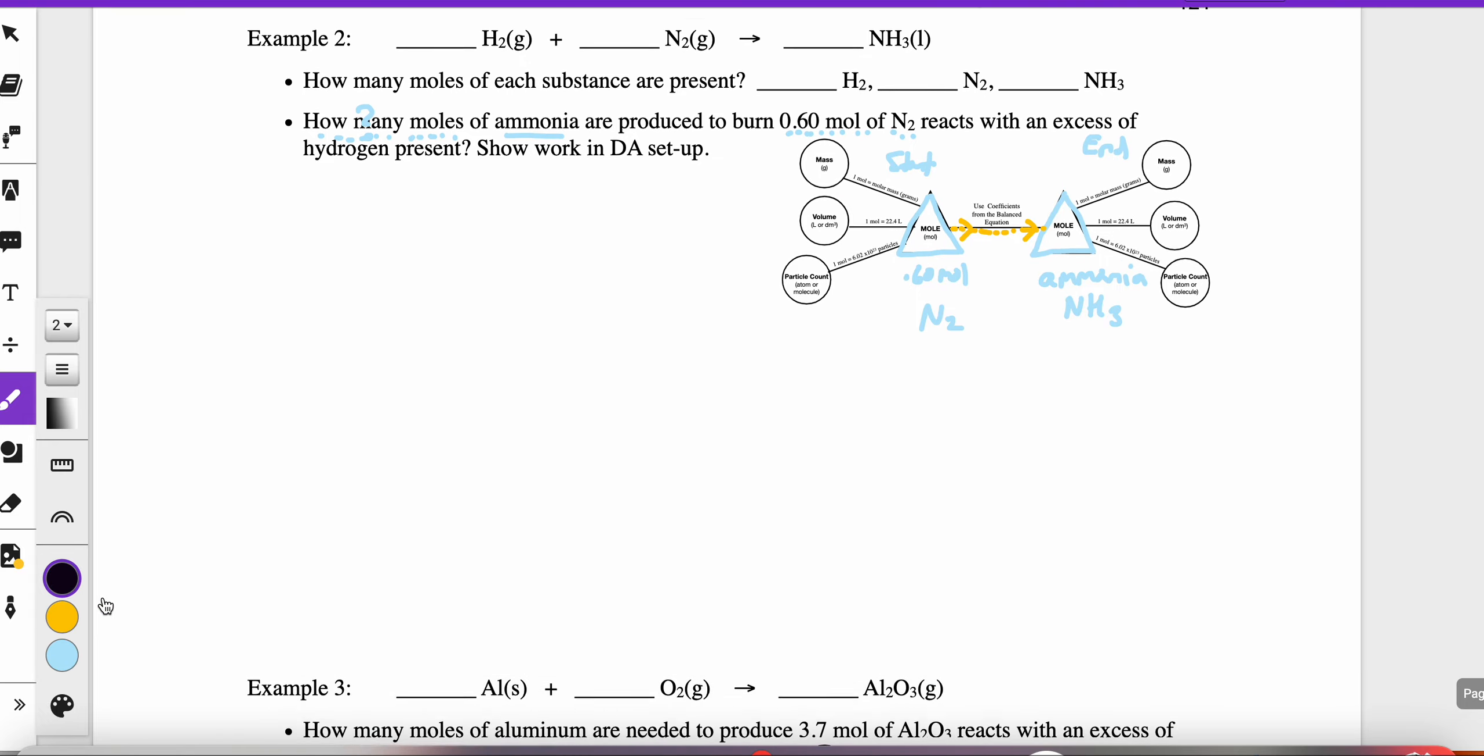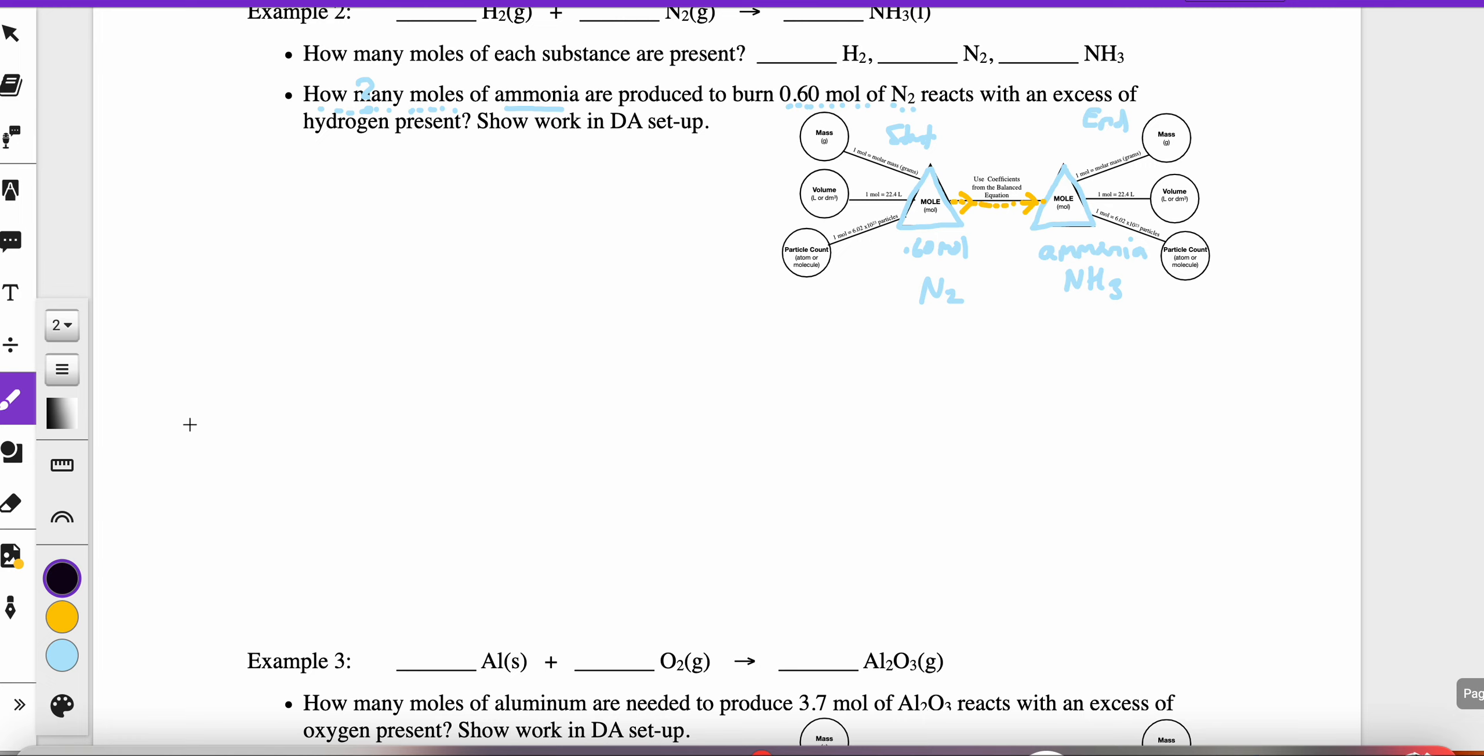So here we go. We have 0.60 moles of N2. When I'm crossing over one of these lines to the next quantity, that means I need an equivalence. So I'm going to make my little equivalence here. What I want to make appear is moles. And I'm going to use the formula NH3 because that's easier to write than the word ammonia. So I want to get to moles of ammonia. And I want to make moles of N2 disappear. And so I have moles N2 upstairs, moles N2 downstairs. They will mathematically reduce to one. And then I'm left with moles of NH3.